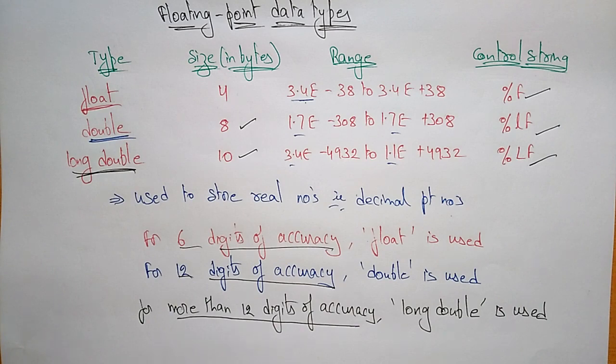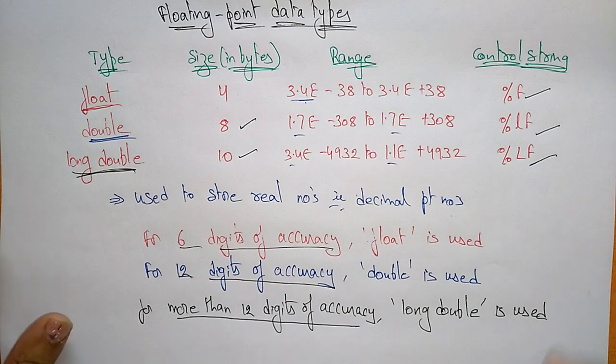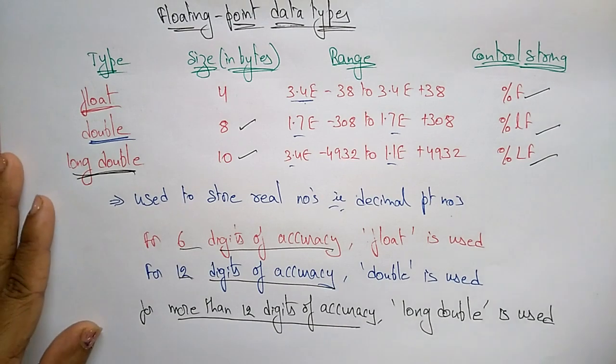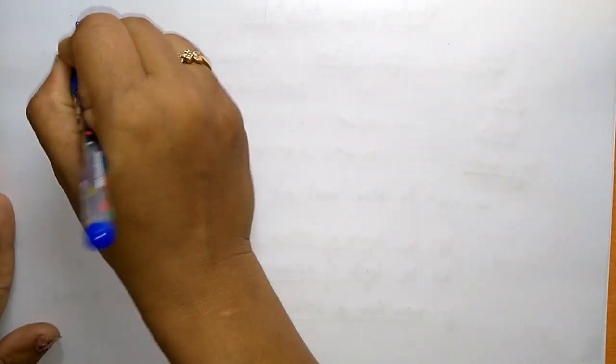Whenever you want to store real numbers, you prefer the floating point data type. If you are using whole numbers, then you go for the integer data type. So based on the programmer's requirement, you can choose different data types based on the usage. Now let us see one example for all three primitive data types.